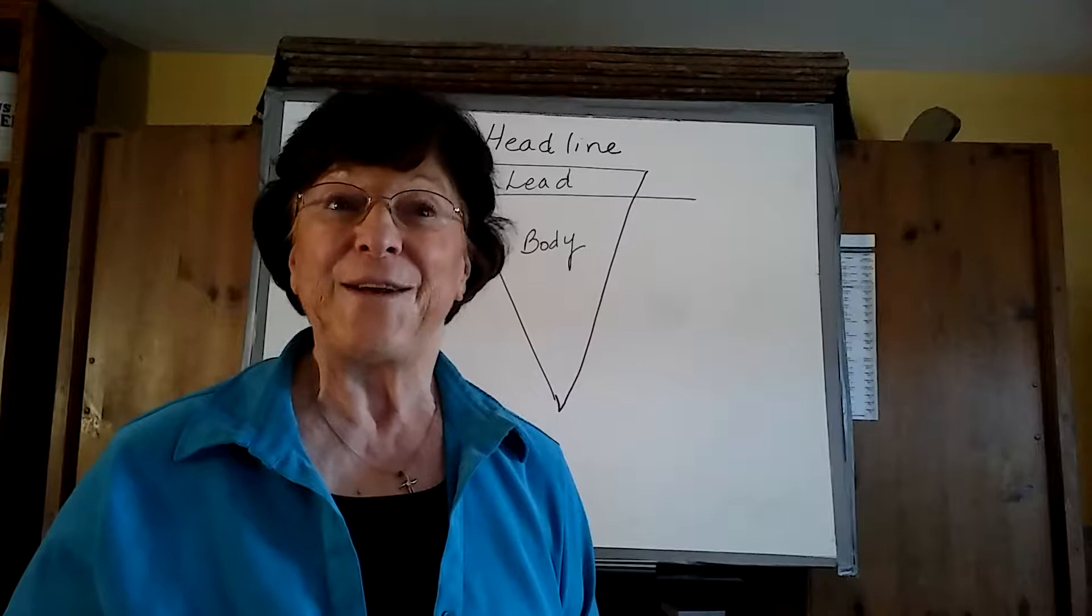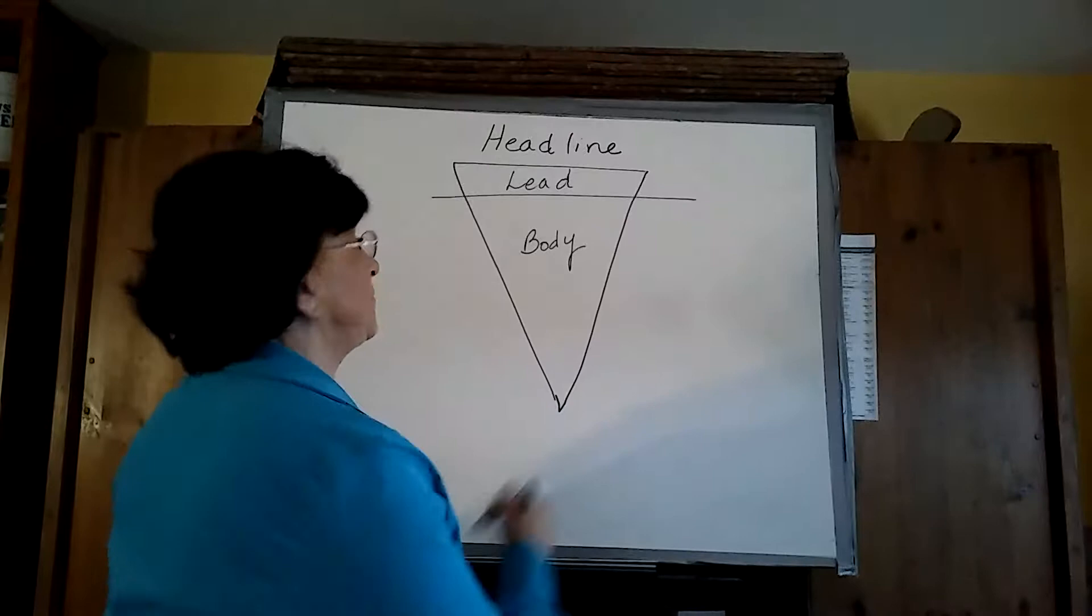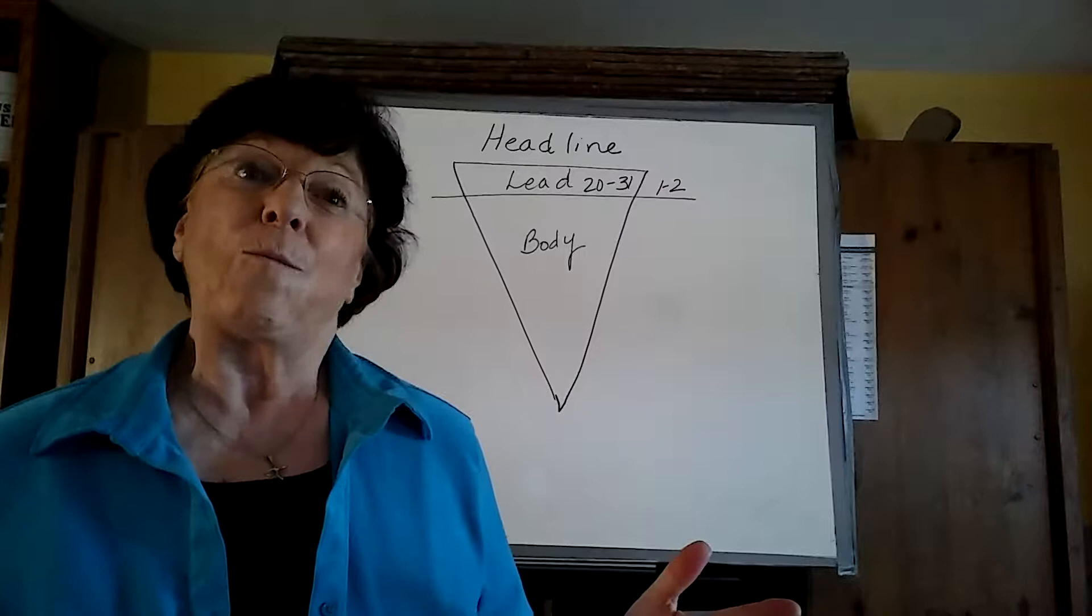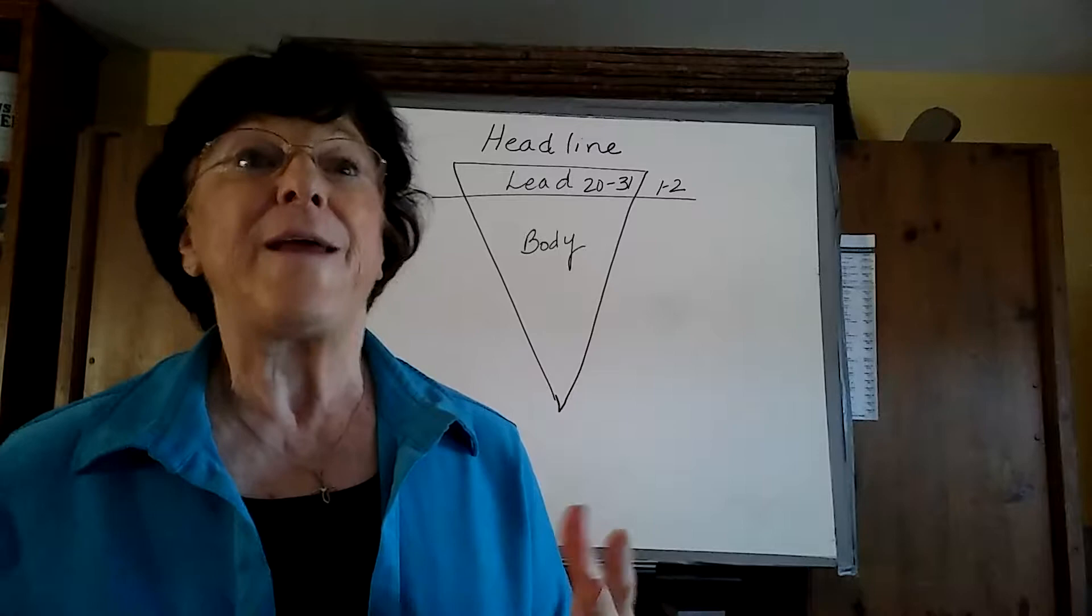Then the next thing you need to know is the first paragraph is called a lead, and a lead is usually twenty to thirty words, one to two sentences. And that lead will tell all the important details: who, what, when, where, why and how. And if some of the answers to some of those questions can be put later, they will go in the body of the paragraph.